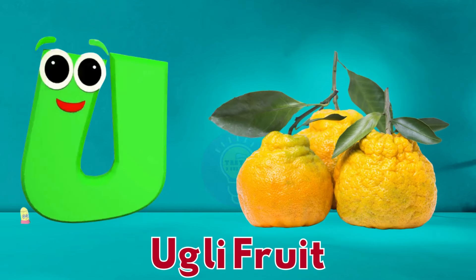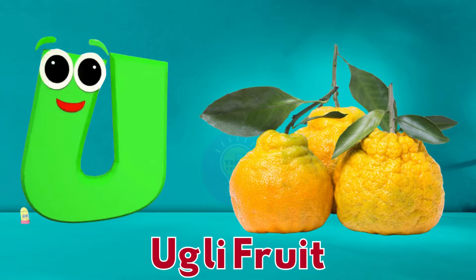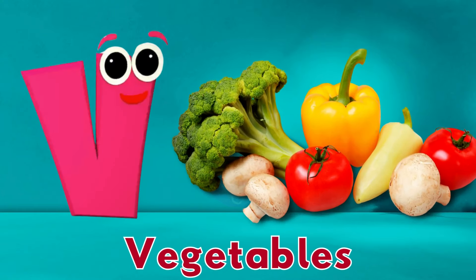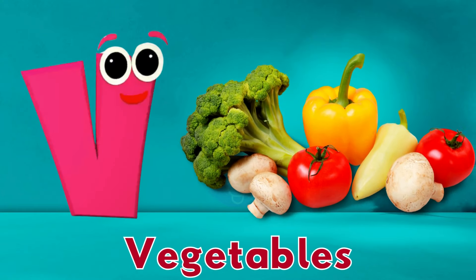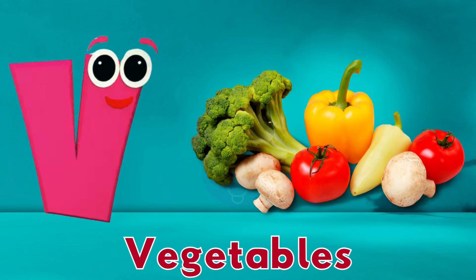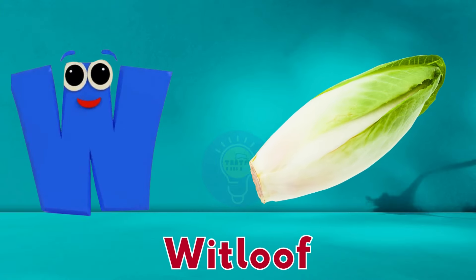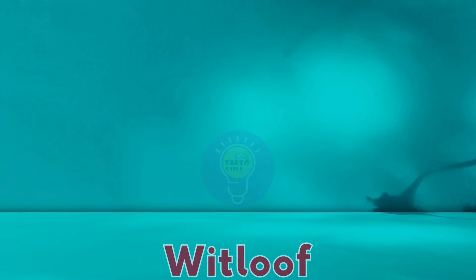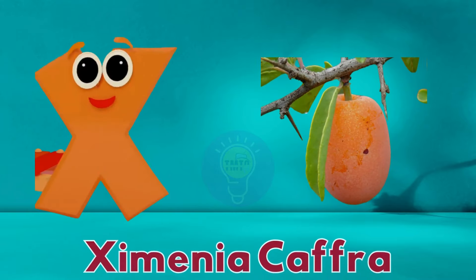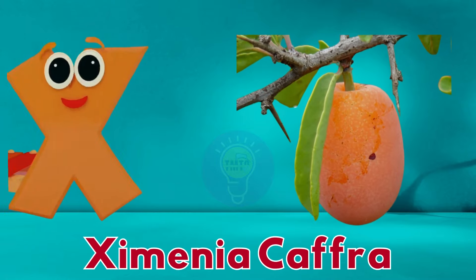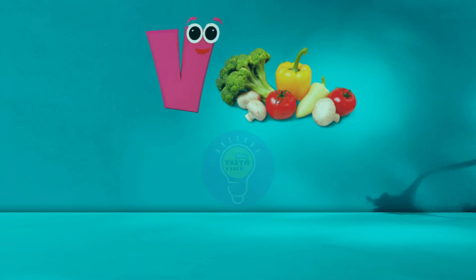U is for ugly fruit, ugly fruit. V is for vegetables, vegetables. W is for whitloaf, whitloaf. X is for zymenia caff, zymenia caff.